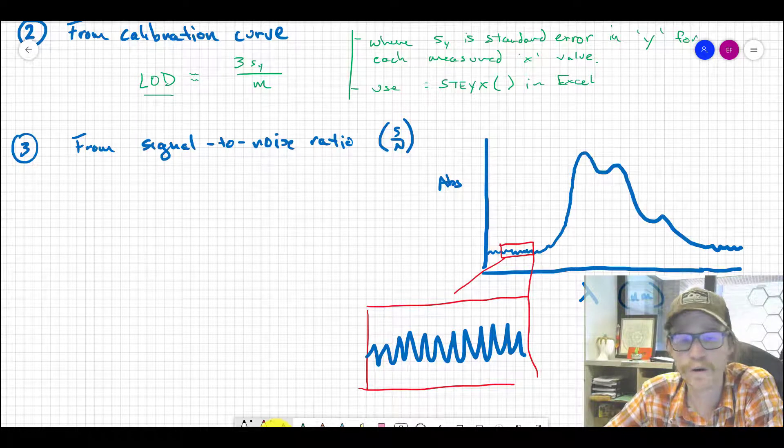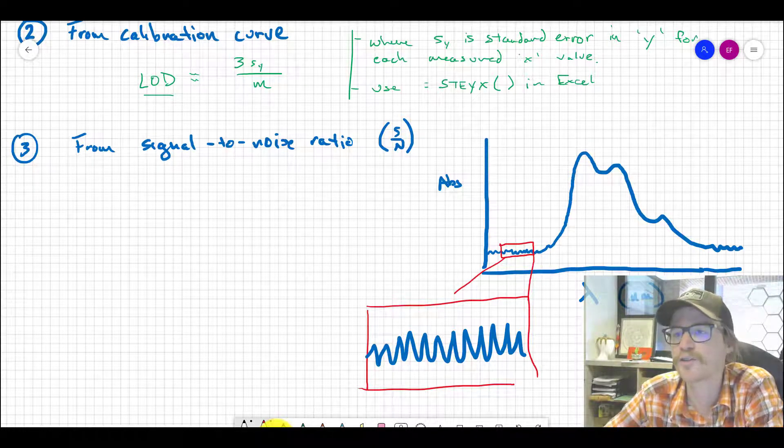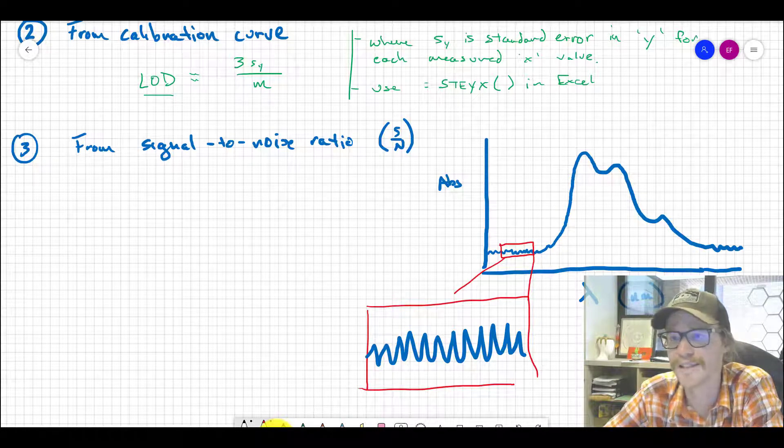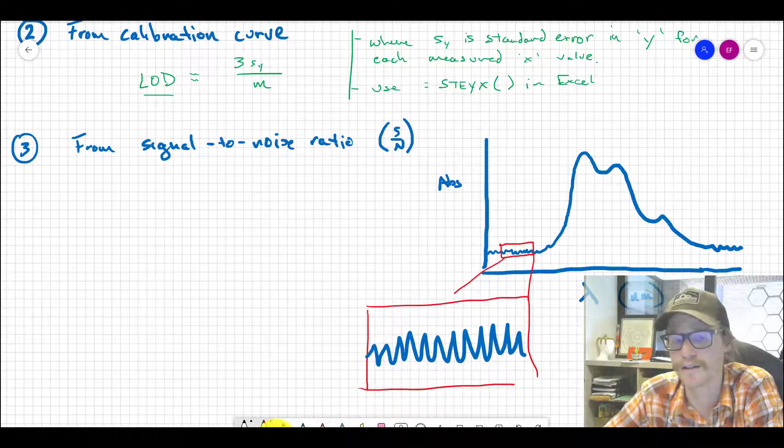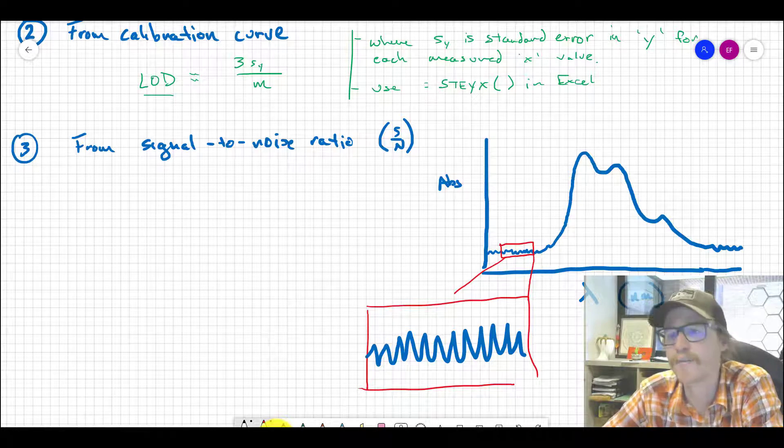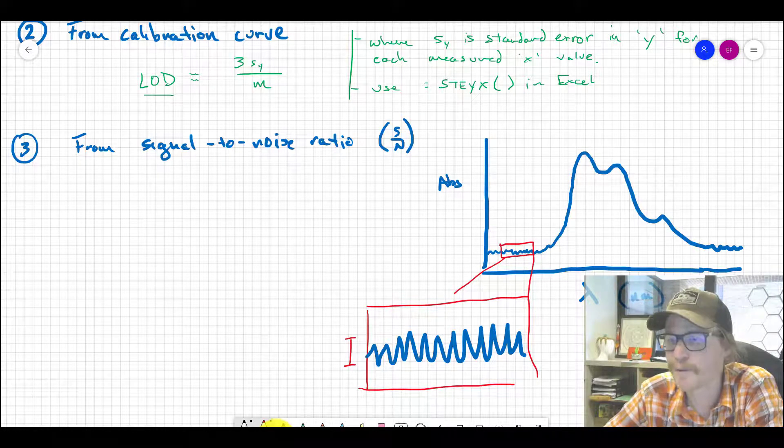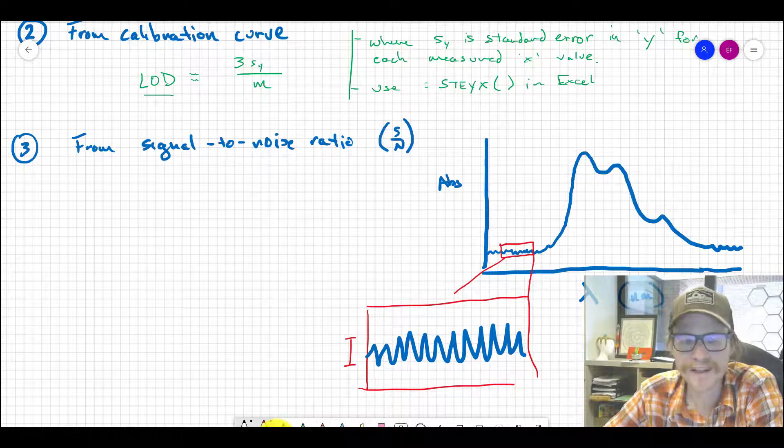That's the noise level intrinsic to whatever mechanism or method we're using for detection. It's probably due to the detector itself and the electronics that constructed it, among other things you'd learn about in an instrumental class. The height of this, the amplitude—actually the peak-to-peak amplitude...